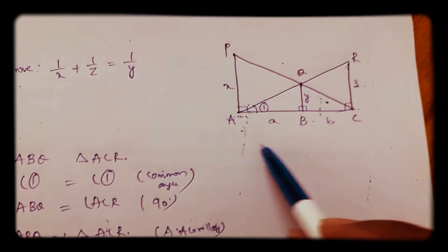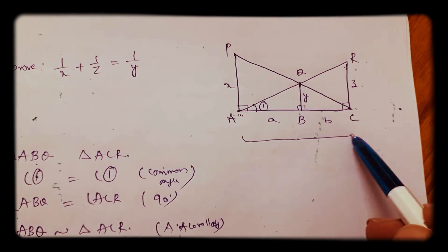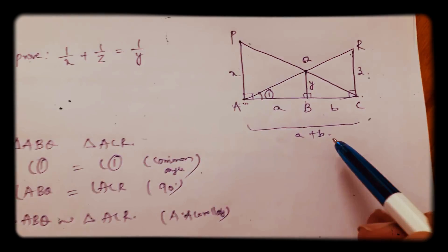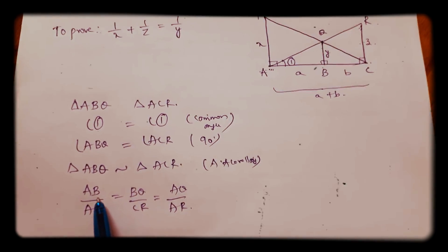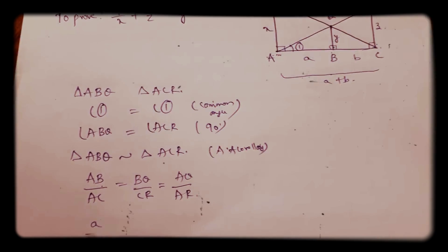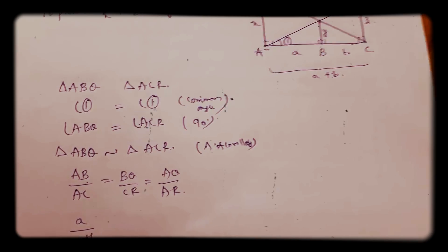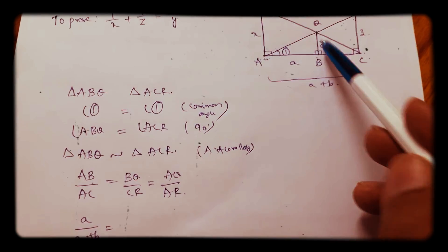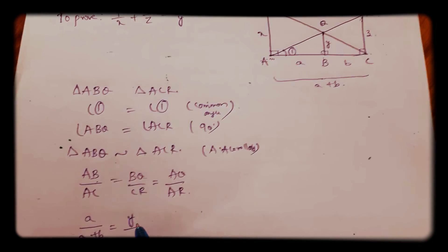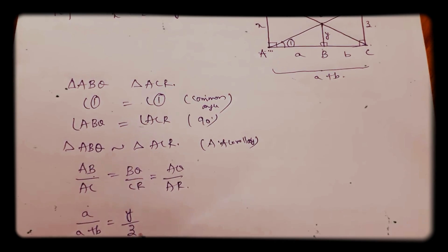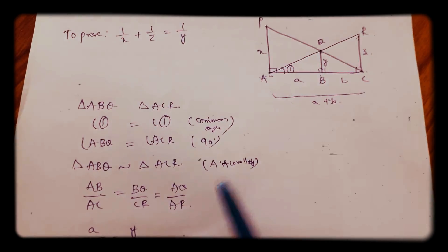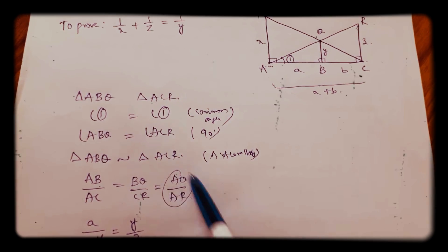Now substitute the values: AB is A, AC total is A + B, BQ is Y, CR is Z, and AQ and AR you don't have, so you can skip this one. This is one equation.